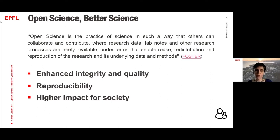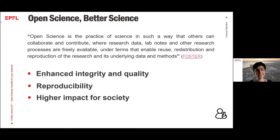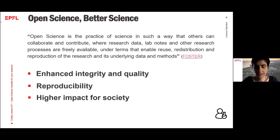If we stay on a general level of advantages, we can say that open science brings enhanced integrity and quality of research, and also makes reproducibility of results much higher. And if we want to go beyond the academic and scientific context, open science also has a higher impact for society at large, making citizens more aware and engaged in science that is sometimes really in a bubble and not shared with others.